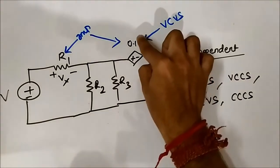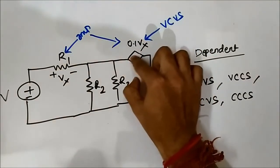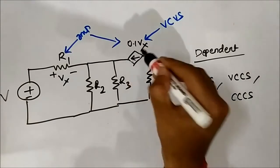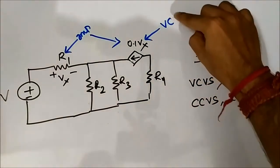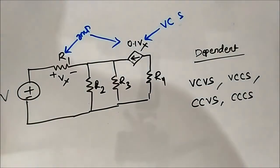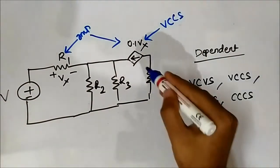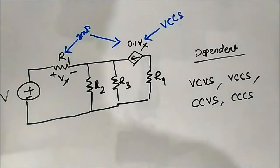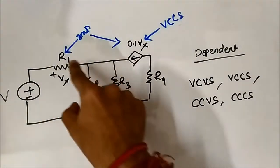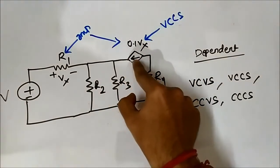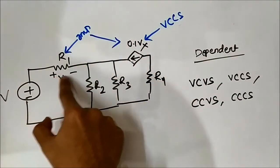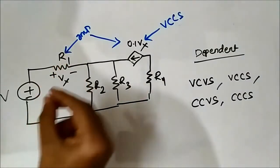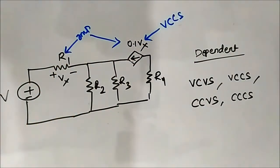Now if instead of the voltage source symbol we insert an arrowhead, it becomes a voltage controlled current source. This is because it is now a current source, but its value still depends on the voltage drop Vx across resistor R1. So another voltage controls the value of this current source, making it a voltage controlled current source.